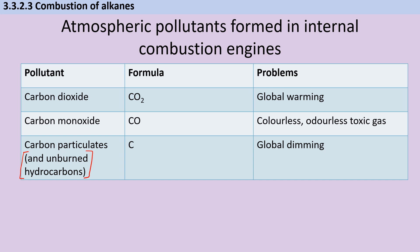Carbon particulates and also other particulates made of unburned hydrocarbons cause a phenomenon called global dimming. This literally means there are tiny particles in the atmosphere which are reflecting the sun's light back, so not as much sunlight is reaching the ground. And this is one reason why it's often a lot dimmer in big cities with poor air quality.